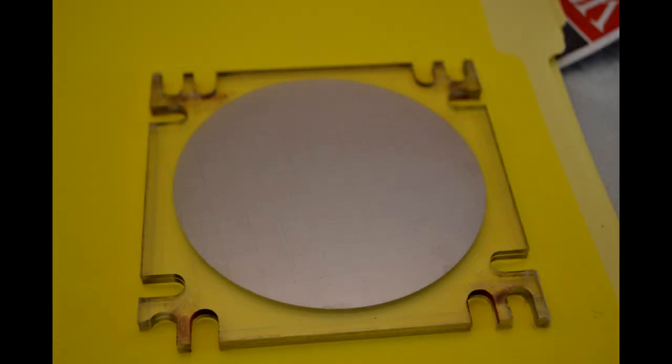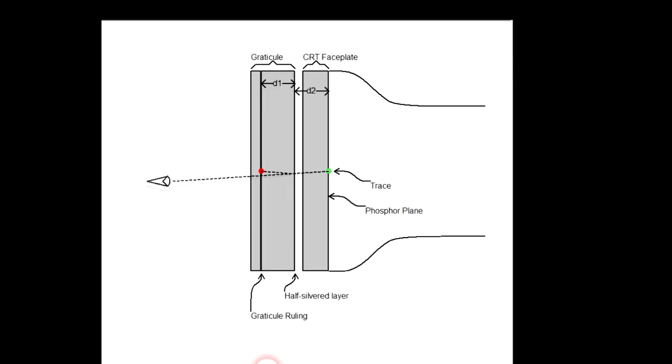The layer closest to the CRT faceplate is a half-silvered mirror which reflects some light and lets the remainder pass through. A viewer looking through the assembly sees the trace on the phosphor layer as well as a reflection or virtual image of the graticule grooves.